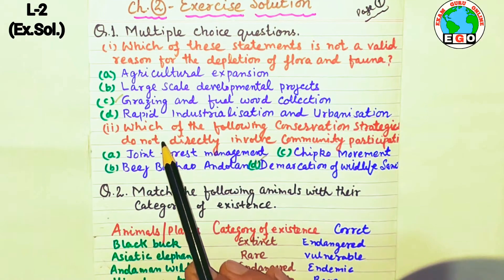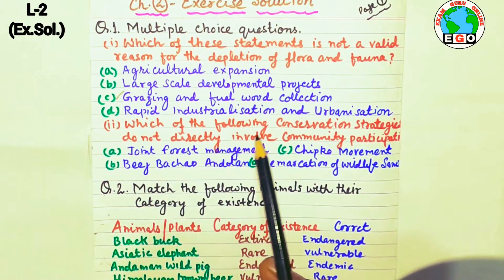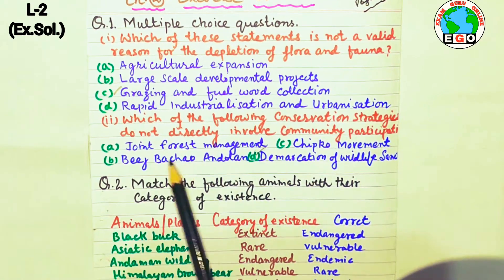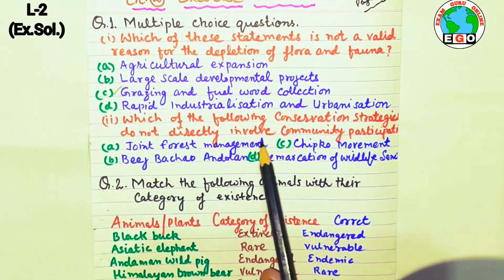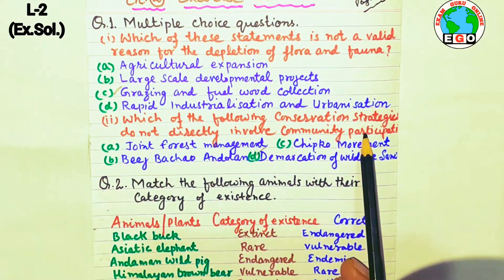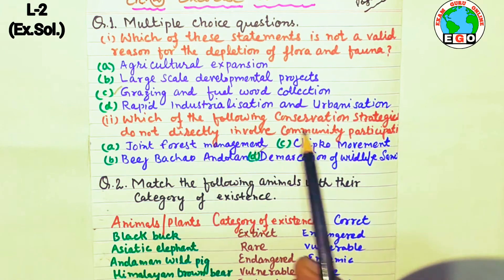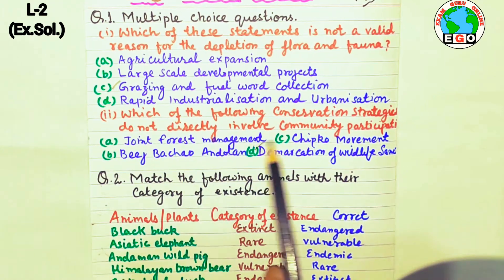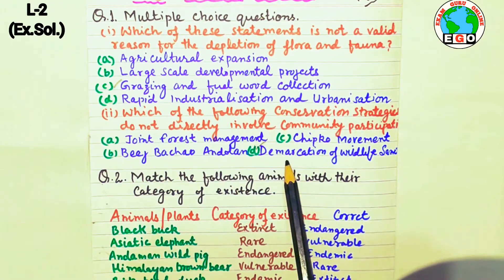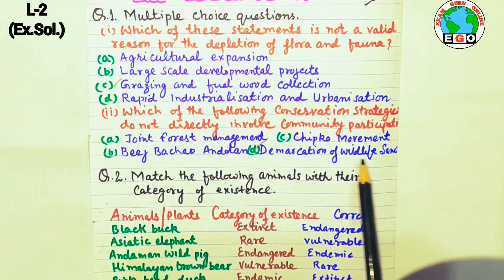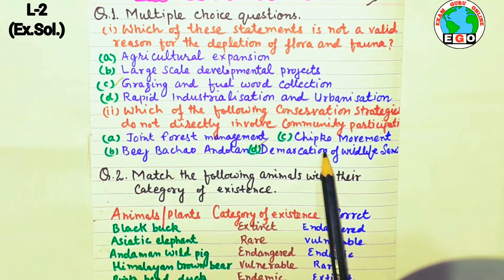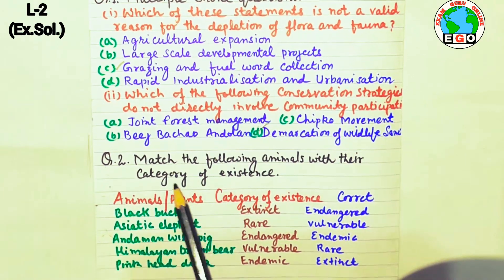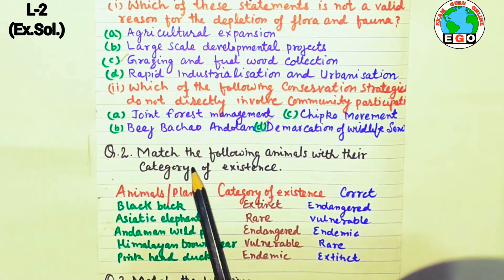Question number two: which of the following conservation strategies does not directly involve the community? The demarcation of wildlife sanctuaries does not involve the community — it is the job of the government, not the community.